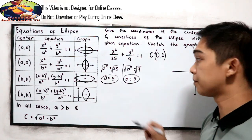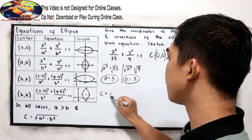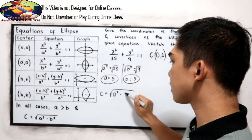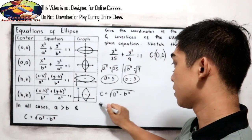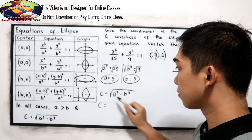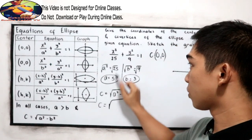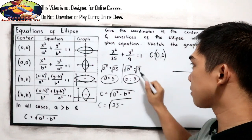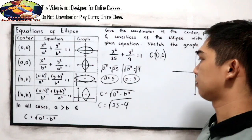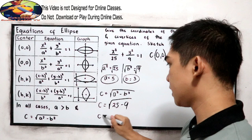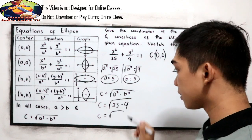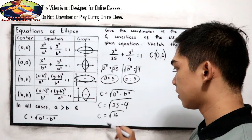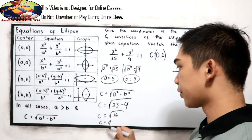C is equal to the square root of A squared minus B squared. So C equals the square root of 25 minus 9, which is 16. Therefore C is equal to 4.